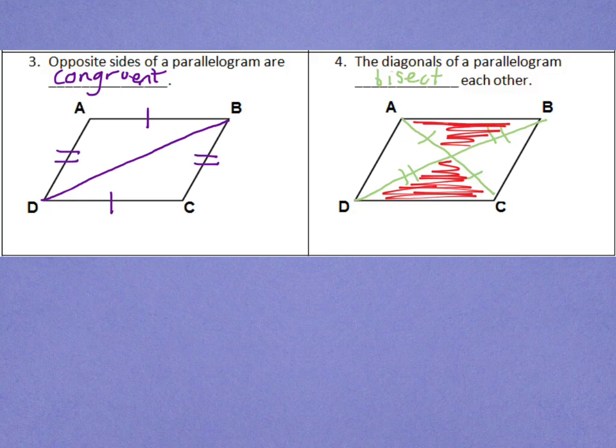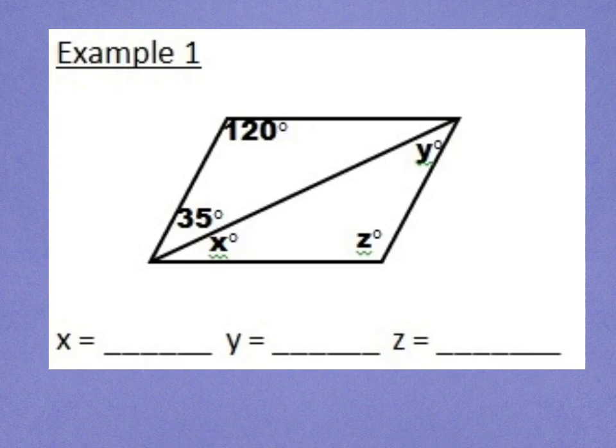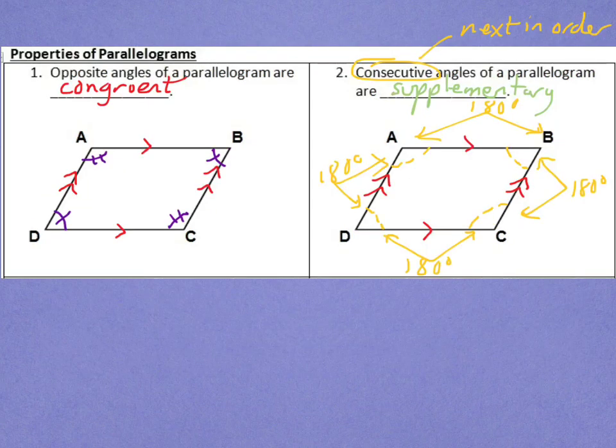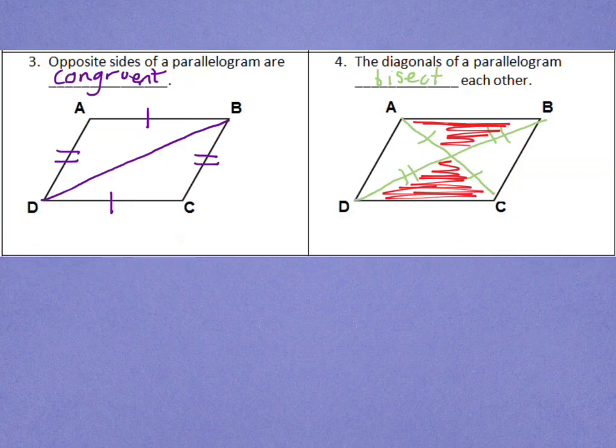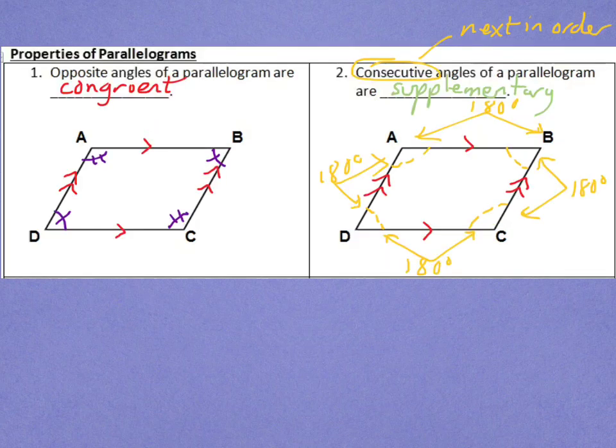Using those properties, let's try some example problems. Now, I will preface by saying that it is impossible for me to put in every different kind of parallelogram example problem into this video. That would make the video way too long. So, we'll just go through a couple, and that will just require you to think a little bit about, in any given problem, which one of our four properties of a parallelogram would help you solve the problem? It should be pretty easy to determine based off whether we're talking about sides or about angles.